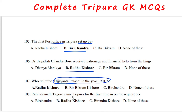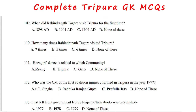Dr. Jagadish Chandra Bose received patronage and financial help from King Radhakishor Manika. Ujjayanta Palace was built in 1901 by Radhakishor Manika. Rabindranath Tagore came to Tripura for the first time on the request of Maharaja Radhakishor Manika, in the year 1900 AD. Rabindranath Tagore visited Tripura a total of seven times.